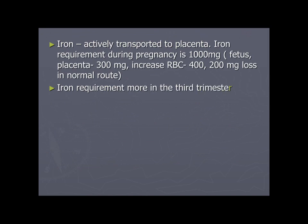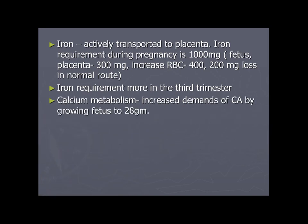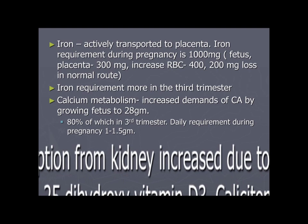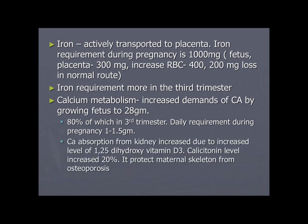Iron is actively transported to the placenta. Iron requirement during pregnancy: 1,000 mg total — 400 mg for the fetus and placenta, 400 mg for increased RBC production, 200 mg lost through normal routes. Iron requirement is greatest in the third trimester. Calcium metabolism: the growing fetus demands 28 grams of calcium, 80% of which is in the third trimester. Daily calcium requirement during pregnancy is 1–1.5 grams. Calcium absorption from kidneys increases due to elevated 1,25-dihydroxyvitamin D3. Calcitonin level increases 20% to protect the maternal skeleton from osteoporosis.